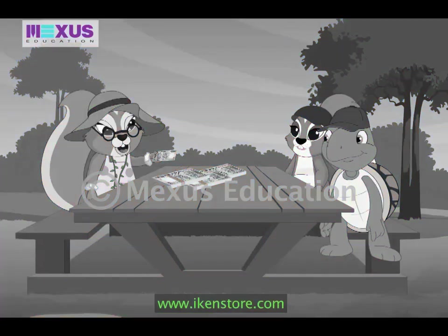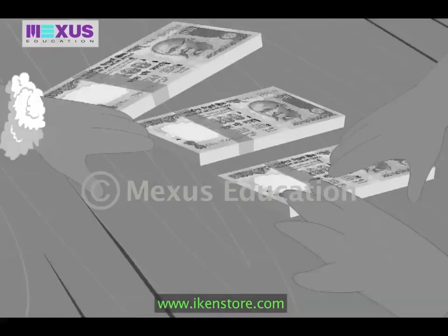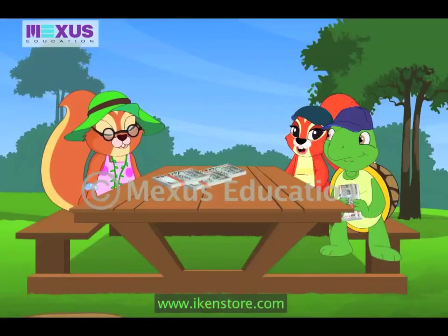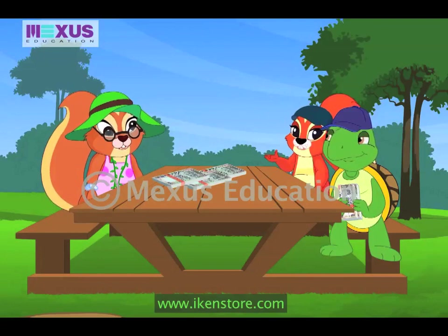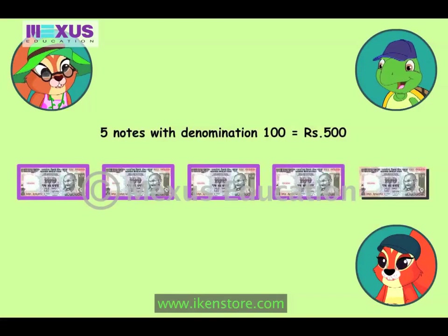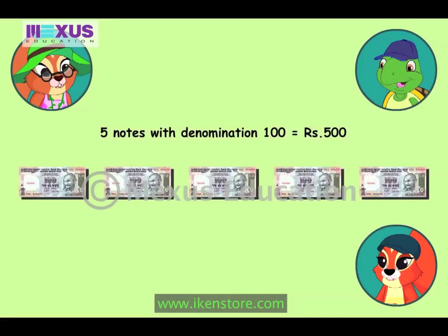This is a hundred rupee note. So, Max, you collect all the hundred rupee notes. Max, how many notes do we have of the one hundred denomination? There are one, two, three, four, five — five hundred rupee notes, or five notes with the denomination of one hundred.